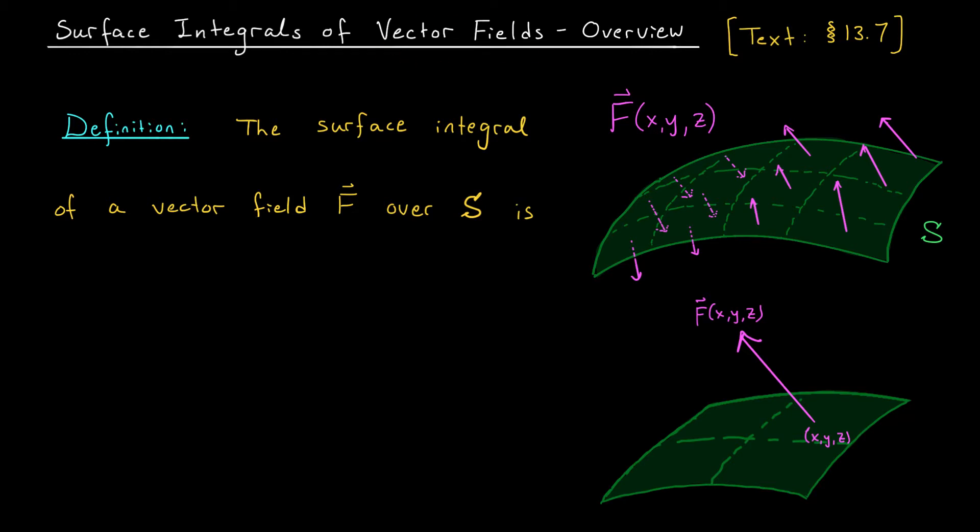Just like when we define the line integral of a vector field, we're motivated by a very physical problem. So to start things off, let's suppose that we have a vector field F living in R3. At every point X, Y, Z in its domain, we're going to see a little arrow with three components.